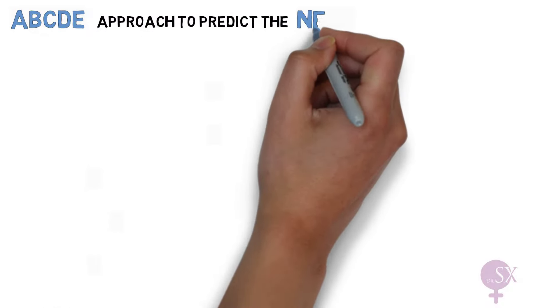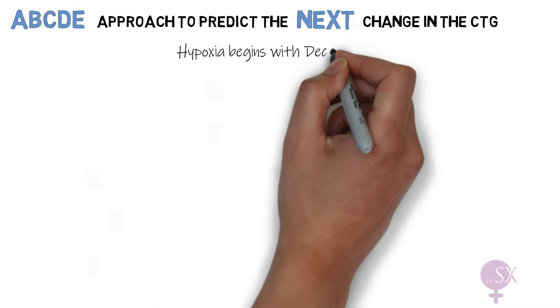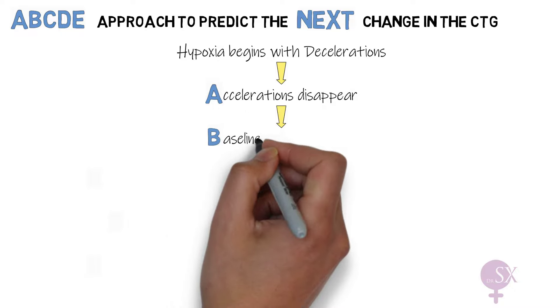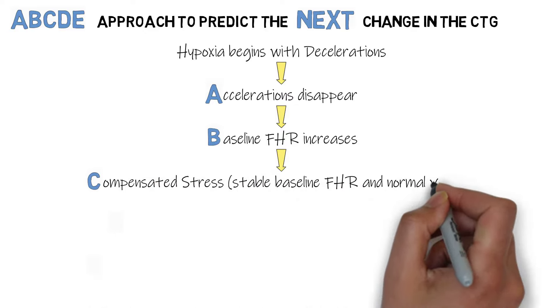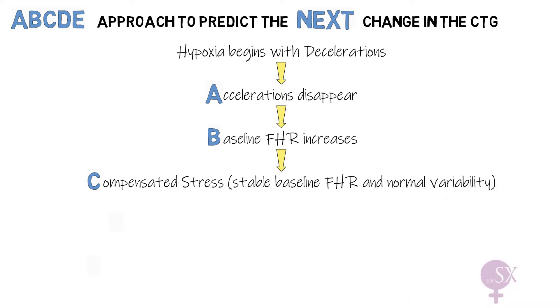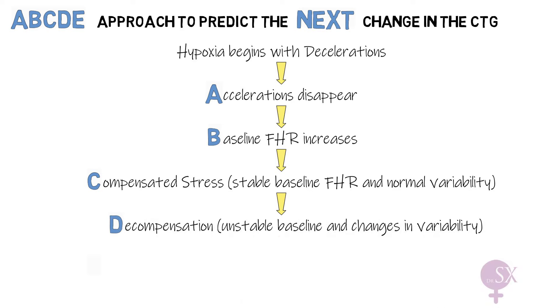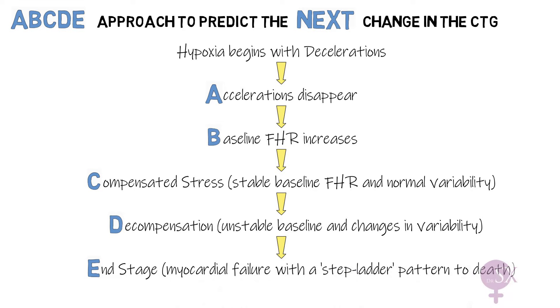Fetal physiology may not be the easiest to understand, so here's a mnemonic to help you with the CTG stages — the ABCDE approach to predict the next change in the CTG. Hypoxia will start off by giving us decelerations on the CTG. A: accelerations disappear. B: baseline heart rate increases. C: the fetus goes into a state of compensated stress, with a stable baseline heart rate and normal variability. D: the fetus gets too tired and goes into decompensation, with an unstable baseline and changes in variability. And E: the end stage, with myocardial failure and a stepladder pattern to death.